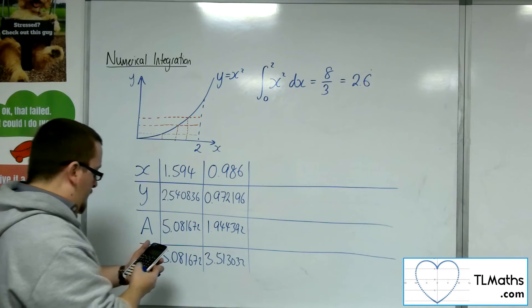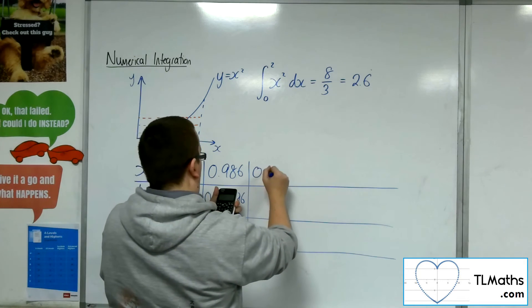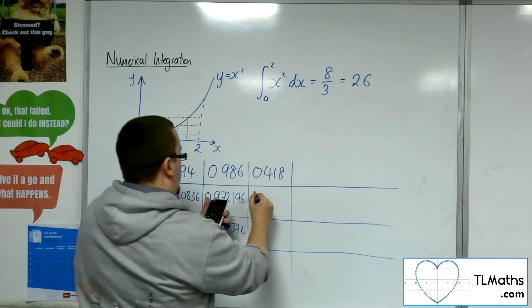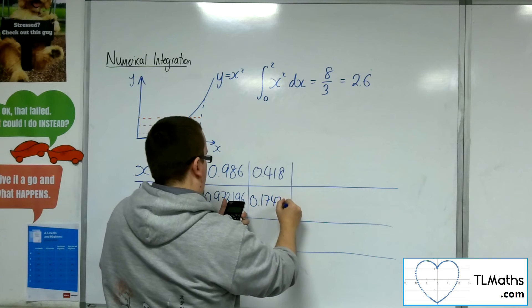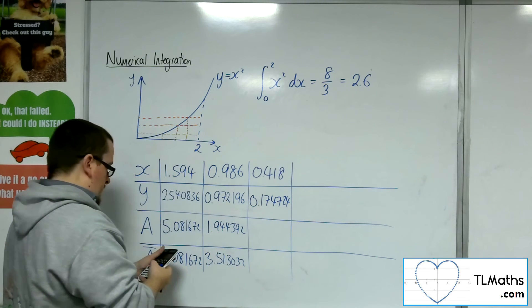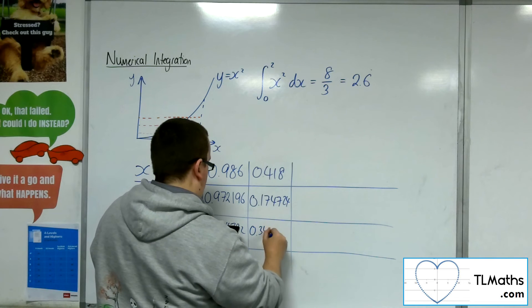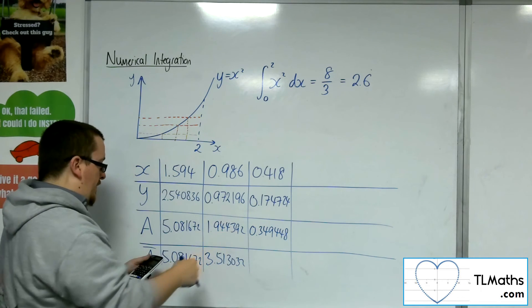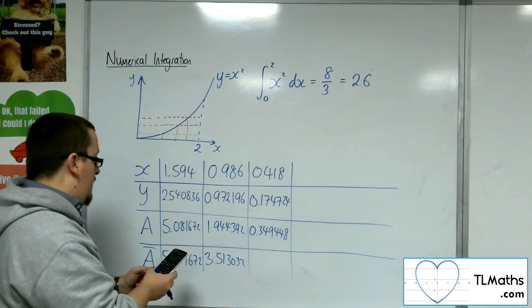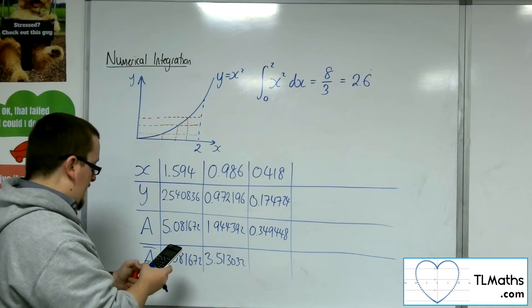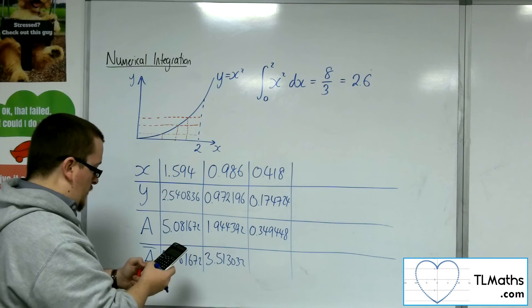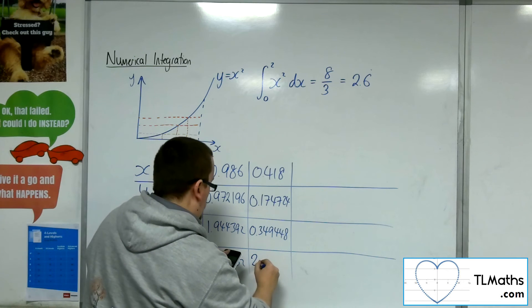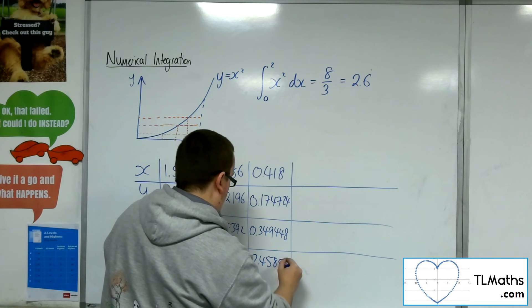Let's try a couple more. Random number times by 2, this time I've got 0.418. Square it, 0.174724. Times that by 2, 0.349448. And so if I add that on to the 1.944392 and the 5.081672, divide that by 3, and I get 2.458504. This is looking good.